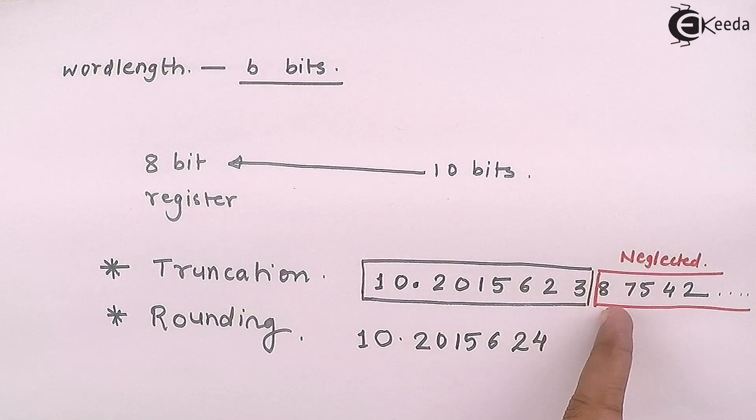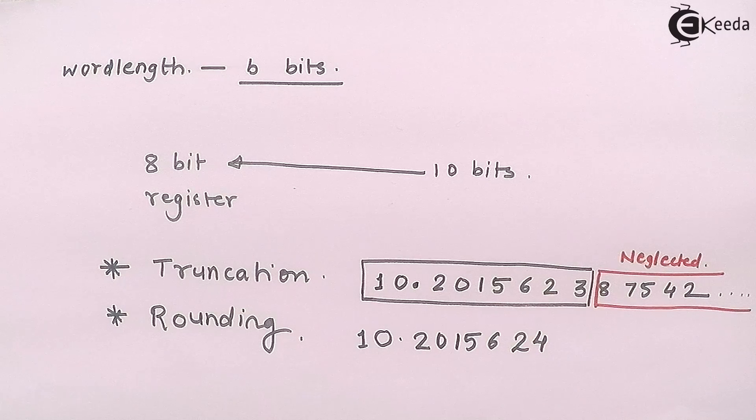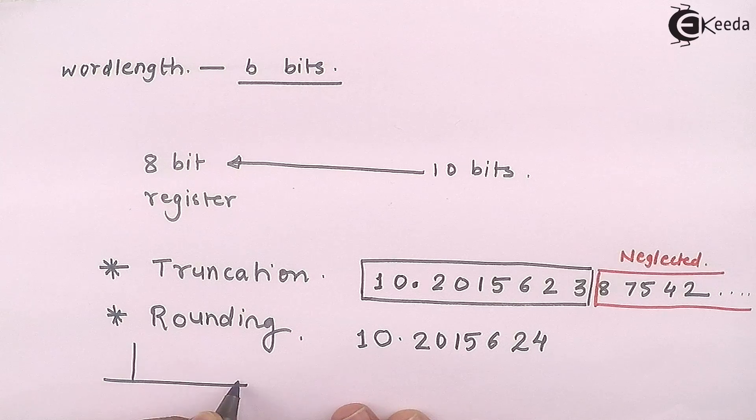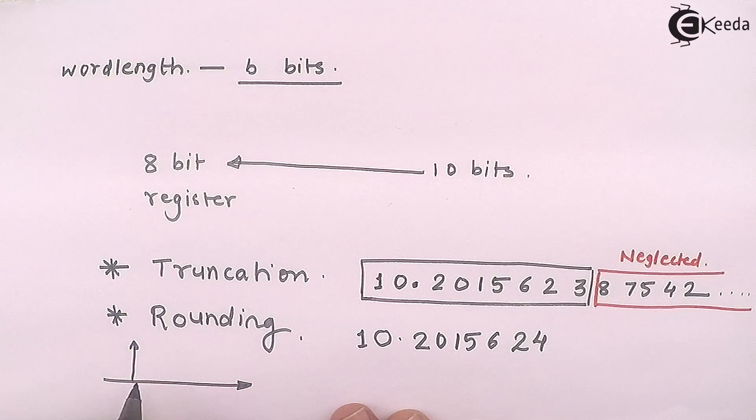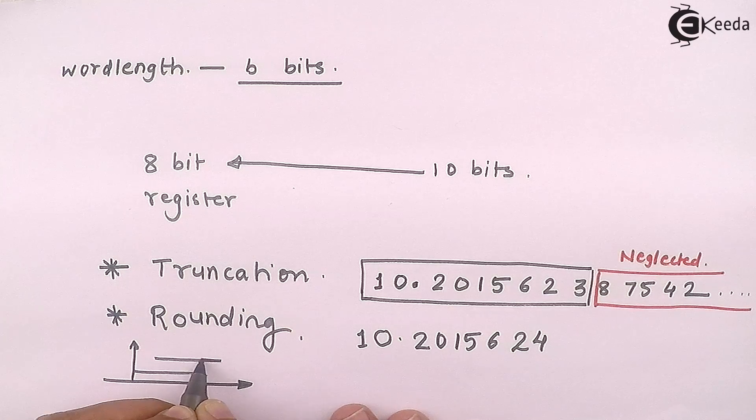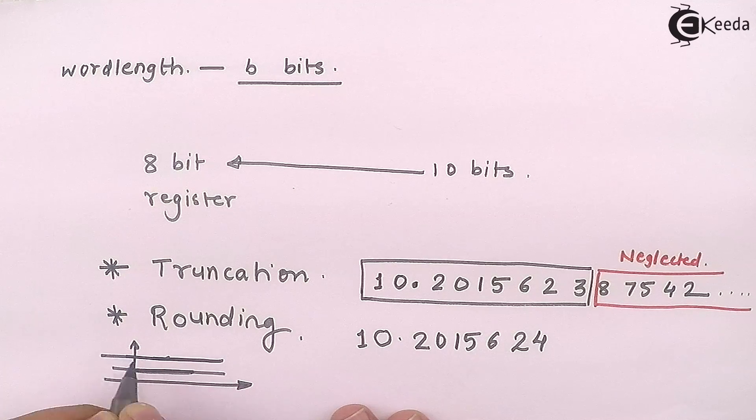If suppose instead of 8 there would be let's say 1, then what I will do I will round to a lower value. So what we are considering is in rounding, suppose I have a number which let's say lies in between these two regions.